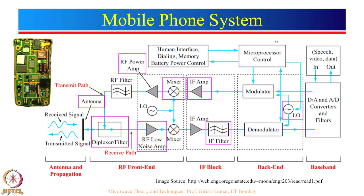There is a microprocessor controller which handles the human interface, dialing, memory, battery power control, and here is the data you want to send, which can be in the form of video data or speech. The analog signal is converted to a digital signal and then through the local oscillator some up-conversion is done — first at a slightly lower frequency and then at a higher frequency. Current mobile phones are much more complicated; they also have a GPS receiver, accelerometer, and many more things.